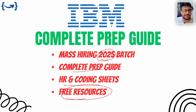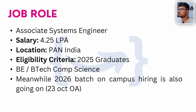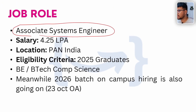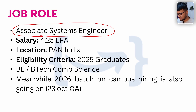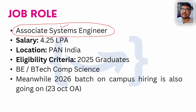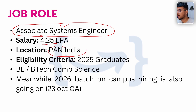This is a complete prep guide with free resources attached to this video. The job role is Associate System Engineer, which is the profile IBM hires freshers for. The salary would be around 4.25 LPA, which is good compared to other company standards such as TCS, which offers the System Engineer profile at around 3.5 to 3.9 LPA.